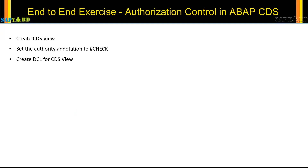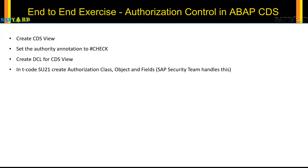After that we will create the DCL, or the access control, for the corresponding CDS. Then we will go to transaction SU21 and create our authorization class objects and fields.